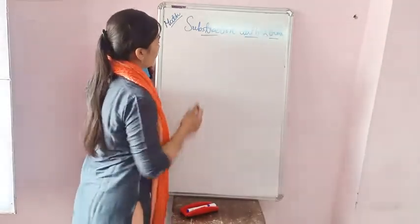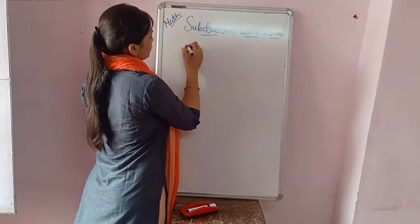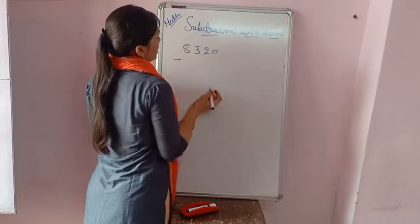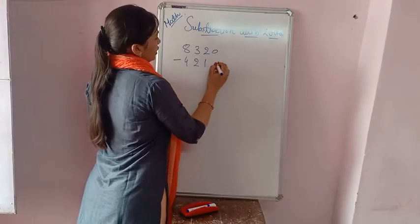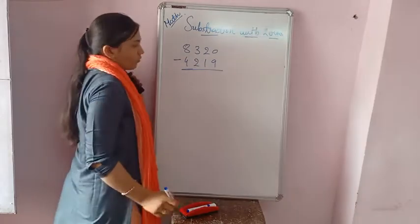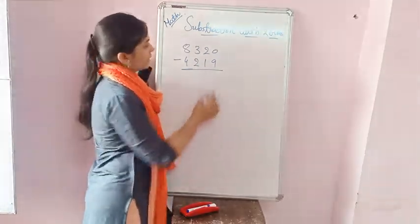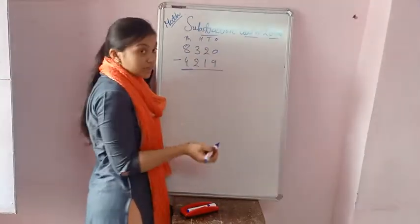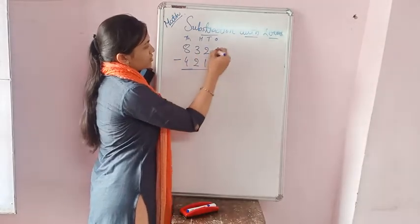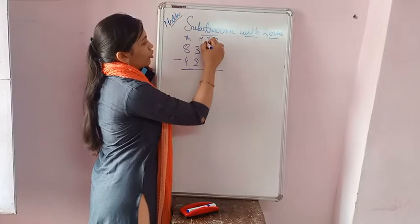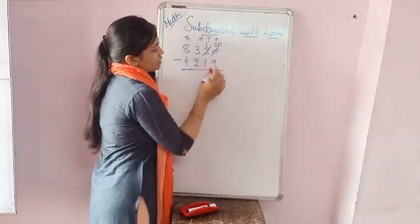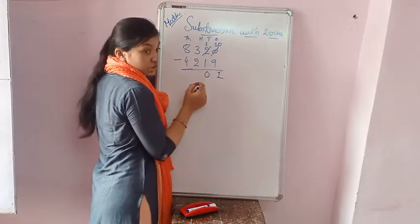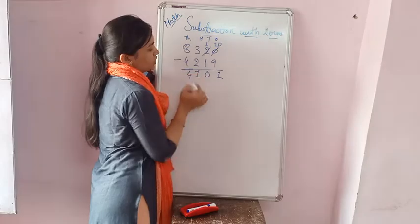Let me take an example with one zero. That is 8320 minus 4290. Starting from the ones place: 0 minus 9 is not possible, so taking a borrow from the previous number. 0 as it is, taking one borrow here and put one here — 10 minus 9 is 1. 1 minus 1 is 0. 3 minus 2 is 1. 8 minus 4 is 4. So the answer is 4030. You can get the answer easily.